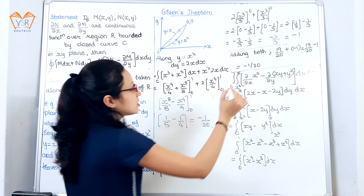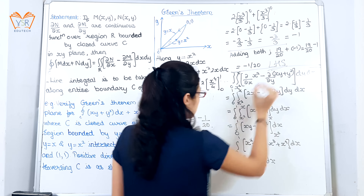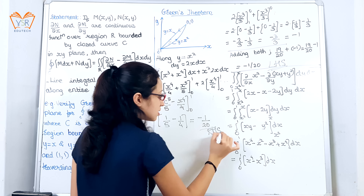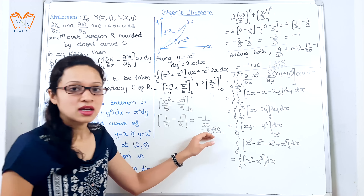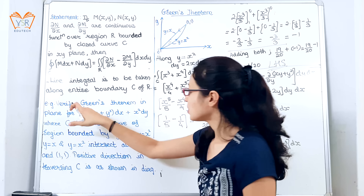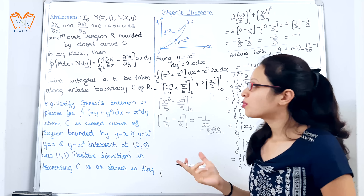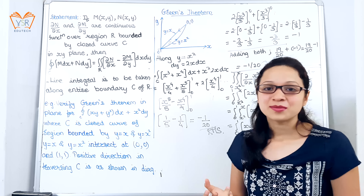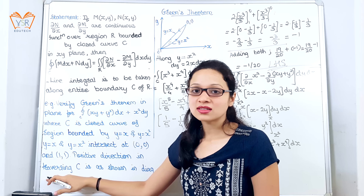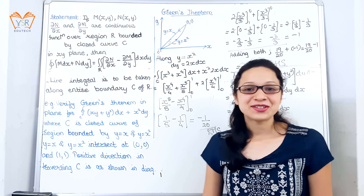This is the LHS — the line integral — and this is the RHS — the surface integral. As LHS equals RHS, we have verified Green's theorem. Hope you understood the concept. Generally, the examples asked in GATE are in this format only. Thank you.